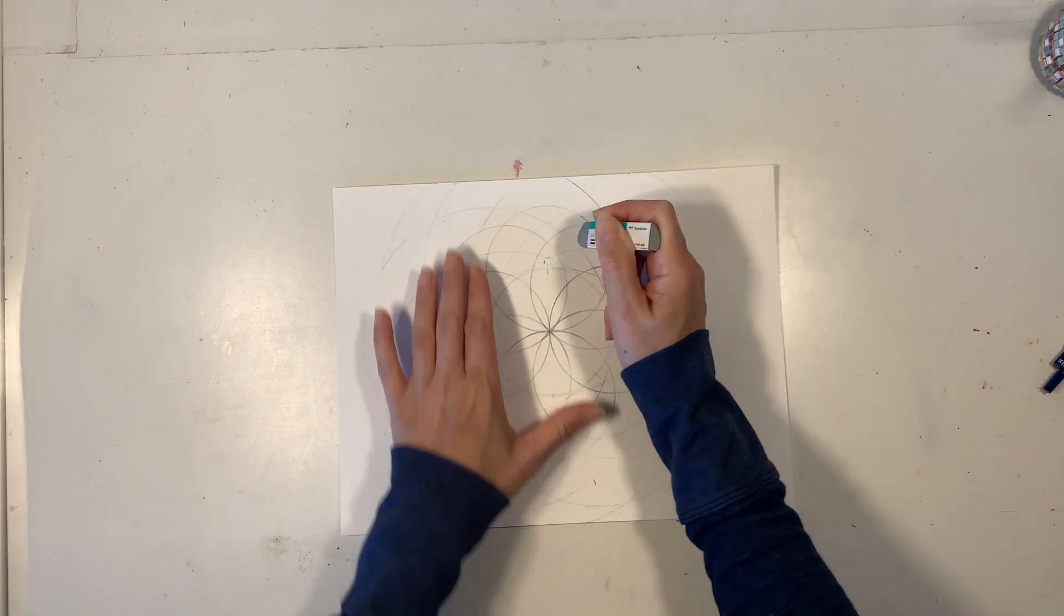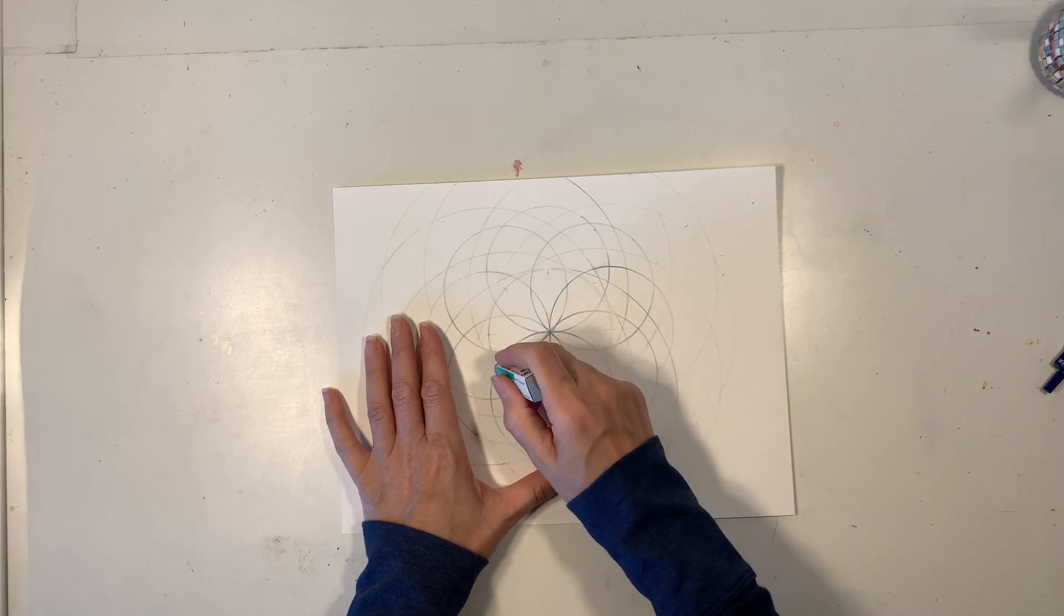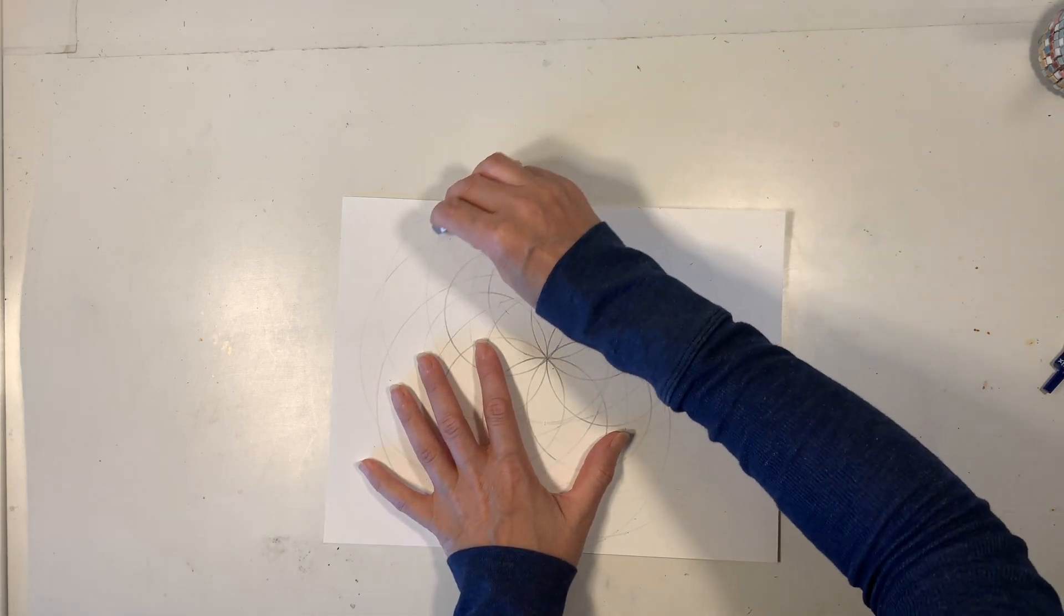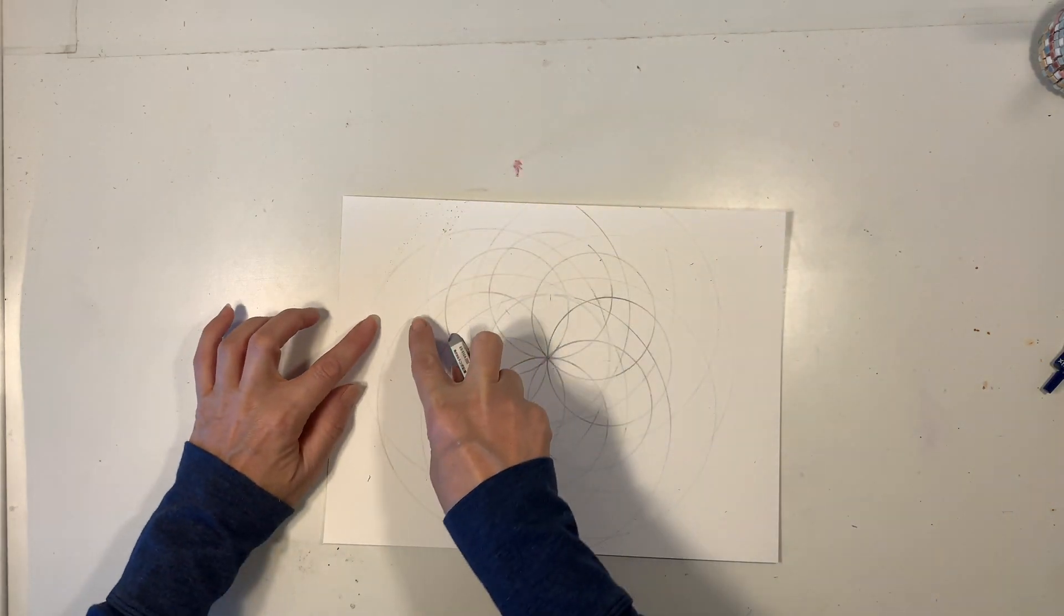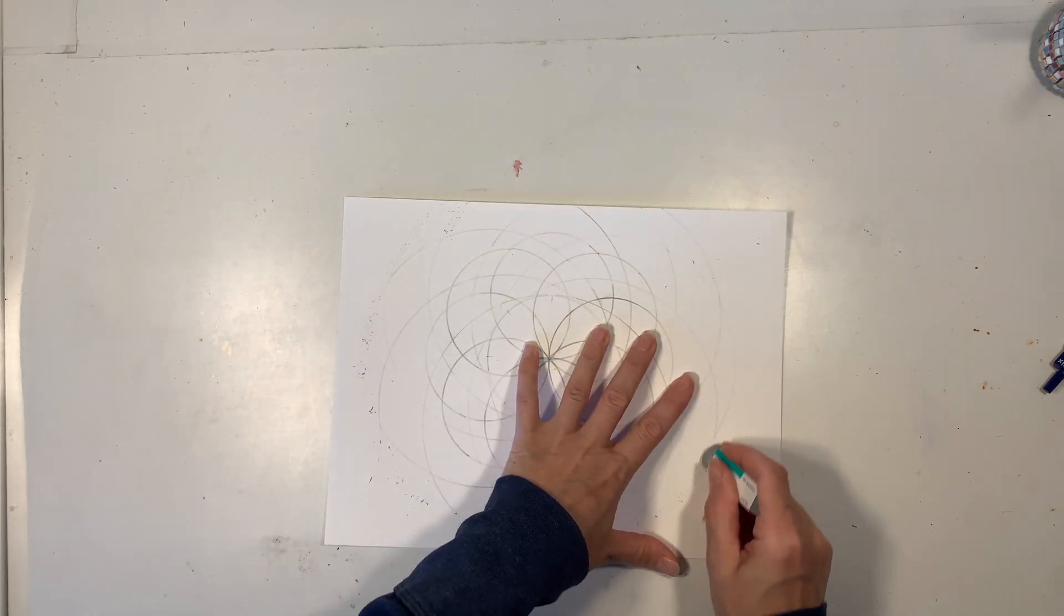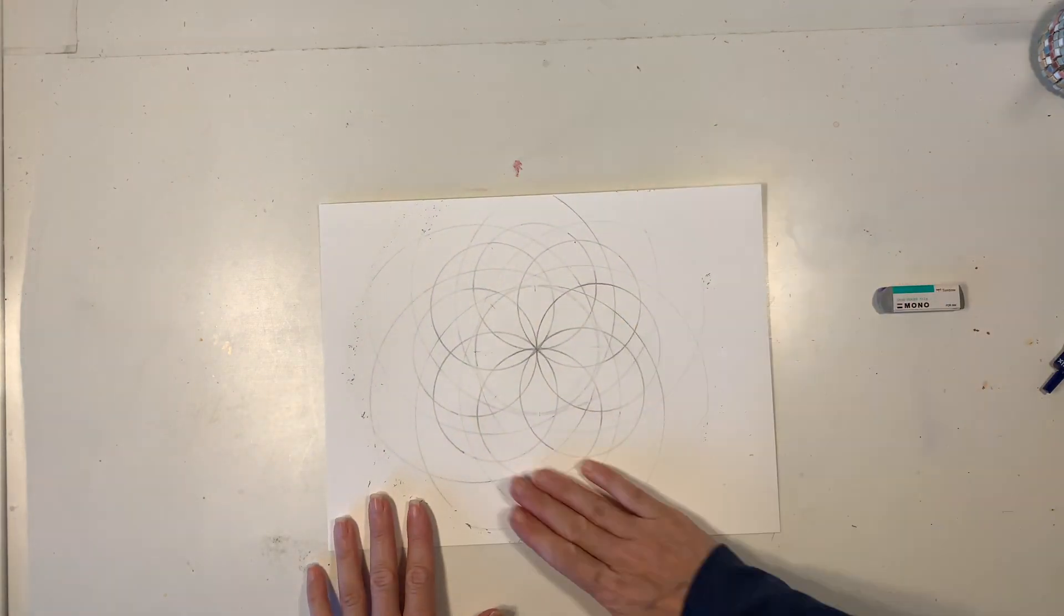So at this point, I'm just going to erase any extra lines that I don't need, any of the markings that I made originally. You can also start to erase any arcs and circles that you don't want. What's really great about these designs is that they can look really different depending on which arcs and circles you erase, and also depending on which segments you end up watercoloring or coloring in.